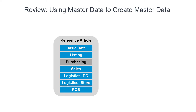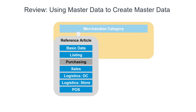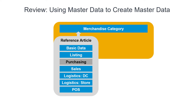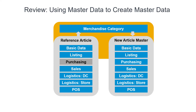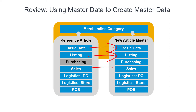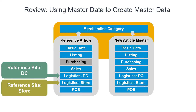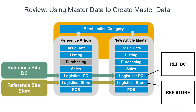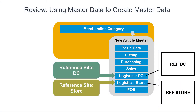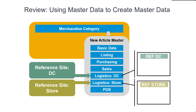We create reference articles and use them as templates to create new articles. Every article is created in a merchandise category, including reference articles, but a reference article can be assigned to multiple merchandise categories. When a new article is created, it's assigned to a merchandise category. Therefore, the reference article assigned to that merchandise category is used as the template for creating the new article. Master data values maintained in the reference article are copied from the reference article to the new article. That includes article master data for the global reference sites: one row of master data for the global reference store, and one row of data for the global reference distribution center. After creating the new article, the work of the reference article is finished.